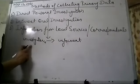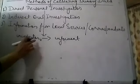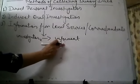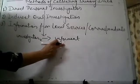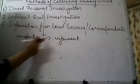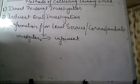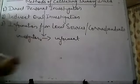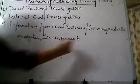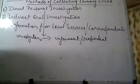When the investigator wants to obtain data regarding any person, that person would be called the informant. So when the investigator collects data by establishing direct face-to-face contact with the informant — that is, the person from whom information is to be obtained, also known as the respondent — that method is called direct personal investigation.